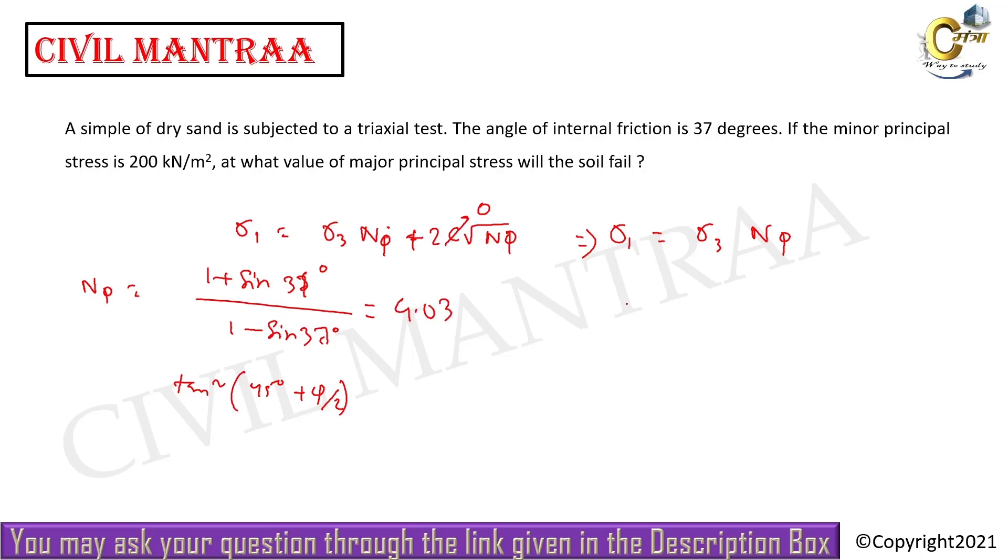So σ₁ = 200 × 4.03 = 806 kilonewton per meter square. This is the value of σ₁. A simple question, hope you all understand. Thank you.